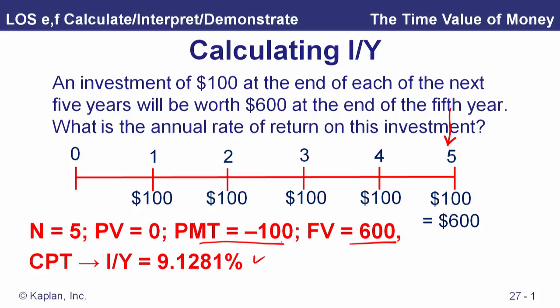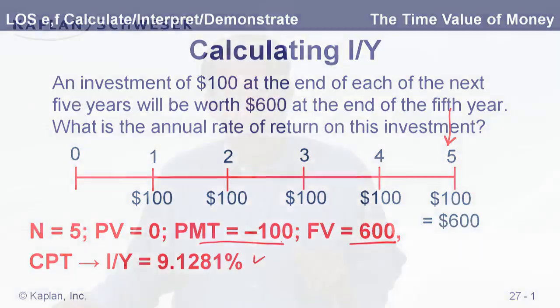We've now covered all five TVM variables. Put in four of them and solve for the other one. Understanding the problem and setting it up correctly is key, and it often helps to use a timeline — especially when first working with these problems. Ask yourself: where are the cash flows, what am I looking for, and which tools will get me there?